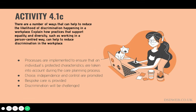Question 4.1c asks you to explain how practices that support equality and diversity — such as working in a person-centred way — can help to reduce workplace discrimination. You may look at how new clients are assessed within your organisation and how their protected characteristics are taken into account. Or how your organisation regularly invites feedback about equality and diversity. Having a robust policy about what to do if discrimination is experienced and how it can be challenged can help reduce the likelihood of it happening, as can effective training.